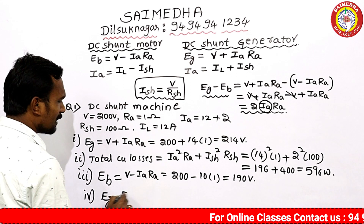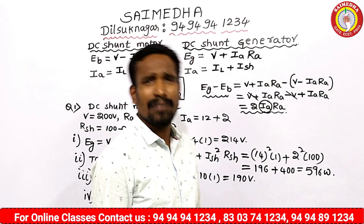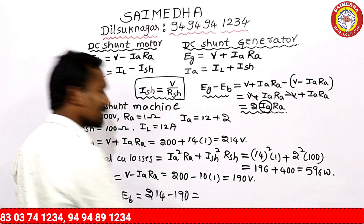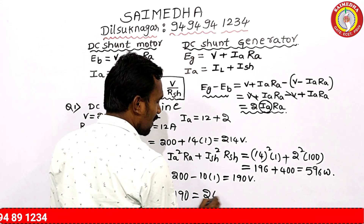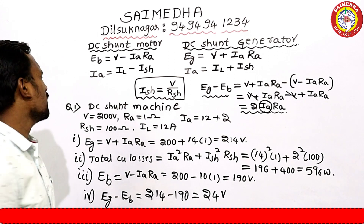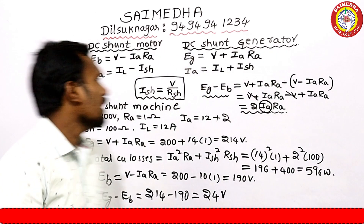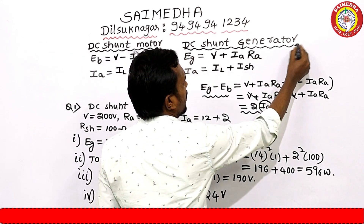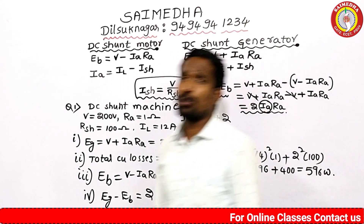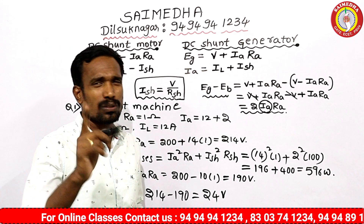Now, if we look at the difference: generated EMF minus back EMF = 214 minus 190. What is the answer? The answer is 24 volts.